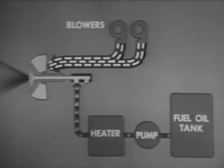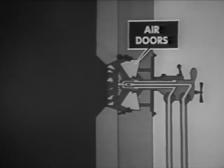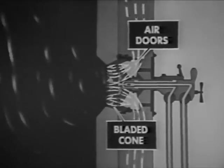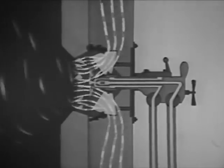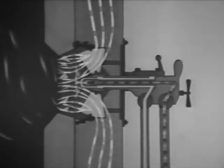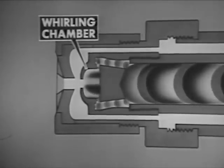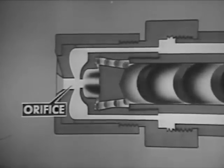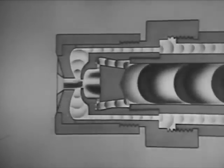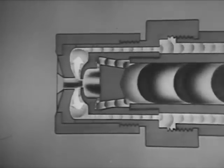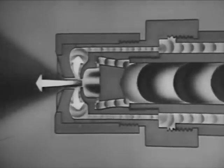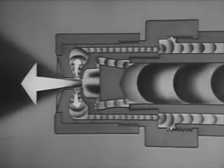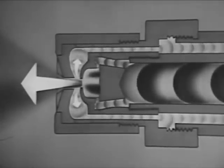In this type of burner — the return flow pressure atomizer — only part of the oil that goes through the burner is actually burned; the remainder returns to the fuel oil pump. Air doors and a bladed cone give the whirling motion to the air that enters the register to mix with the oil, as in the burner seen previously. The oil, heated and under pressure, is forced through the inner tube of the burner barrel to the sprayer plate, where the oil is rotated in the whirling chamber. The oil leaves through the sprayer plate orifice. Centrifugal force sends some of the oil into the return line and back to the fuel oil pump. The remaining oil continues through the orifice into the furnace. At the burner's maximum firing rate, practically all the oil enters the furnace. At the minimum firing rate, practically all the oil returns to the pump.